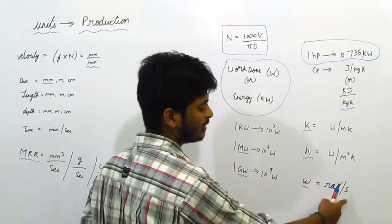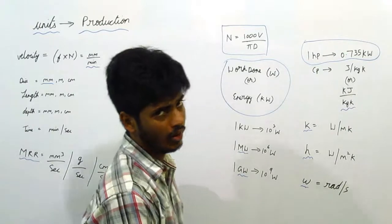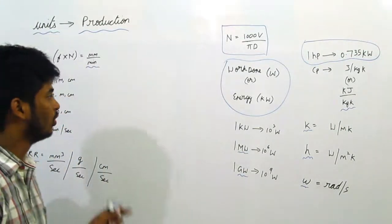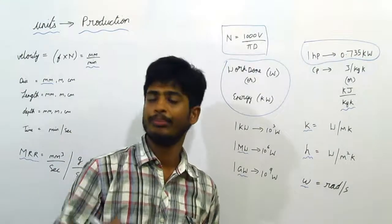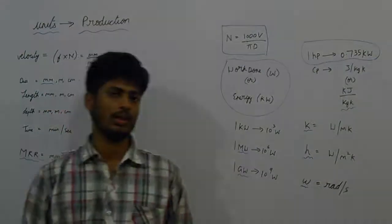At last we have omega. Omega is radians per second. Omega is angular velocity. So these are the most commonly used units for production topics. Thank you.